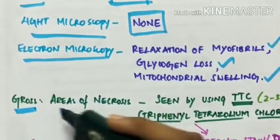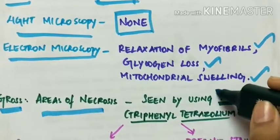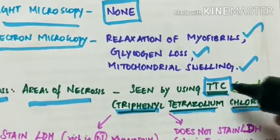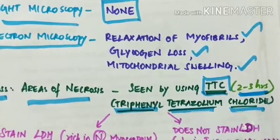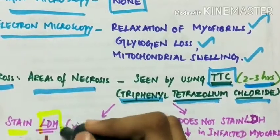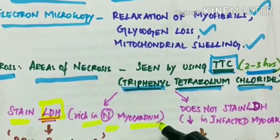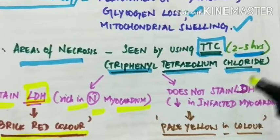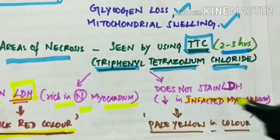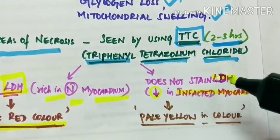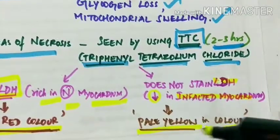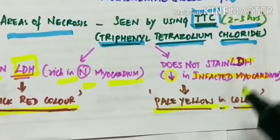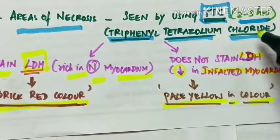Grossly, areas of necrosis become visible in 2 to 3 hours using TTC — triphenyl tetrazolium chloride — which stains lactate dehydrogenase (LDH), rich in normal myocardium. Normal myocardium appears brick red in color when stained with TTC. Infarcted myocardium, deficient in LDH, does not stain and appears pale yellow in color.